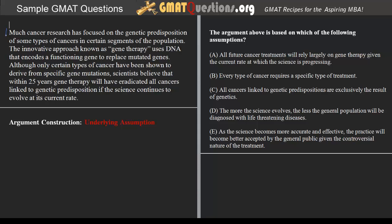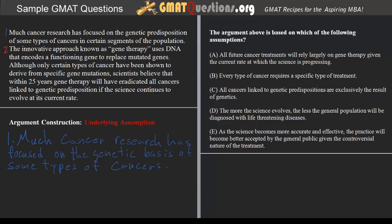Starting with the first sentence: much cancer research has focused on the genetic predisposition of some types of cancers in certain segments of the population. In the second sentence we get that the innovative approach known as gene therapy uses DNA that encodes a functioning gene to replace mutated genes. The second sentence is an extension of the first, considering that the research being conducted into the genetic basis of some cancers is called gene therapy, which functions by replacing mutated genes with healthy genes.